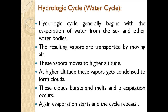The hydrologic cycle is also called the water cycle. It normally begins with the evaporation of water from the sea and water bodies. The resulting vapors are transported by moving air to higher altitudes, where they get condensed to form clouds. Small clouds form first, and with their help, bigger clouds are formed.